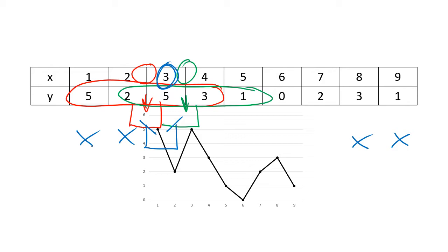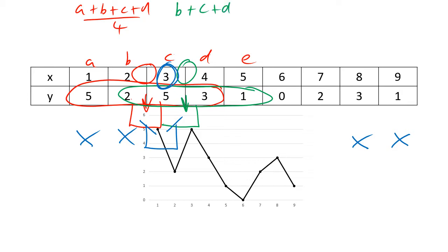The formula is just going to be slightly longer. Imagine we've got five numbers: a, b, c, d, e. So a is 5, b is 2, c is 5, d is 3, and e is 1. The red loop is (a + b + c + d) / 4. The green loop is (b + c + d + e) / 4. Then the third step — the blue step — is we have to add those together and divide by 2.